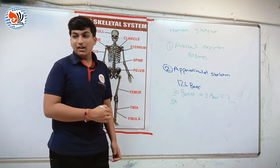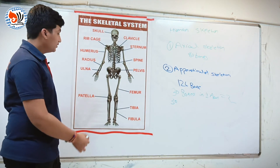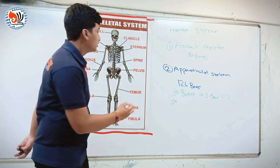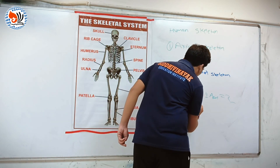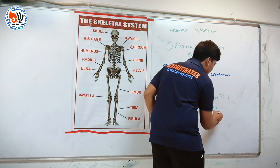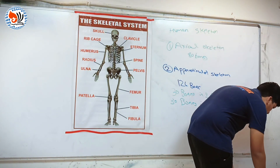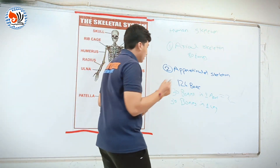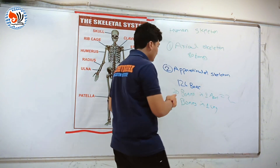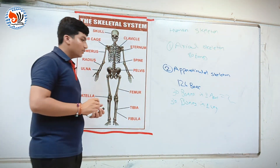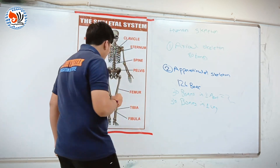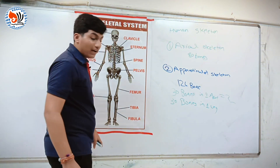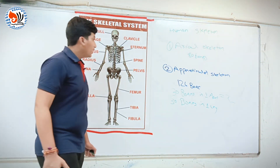In the leg there are 30 bones. With 2 legs, that is 60 bones total. In our leg there are also 7 tarsals, 5 metatarsals, and 14 phalanges.